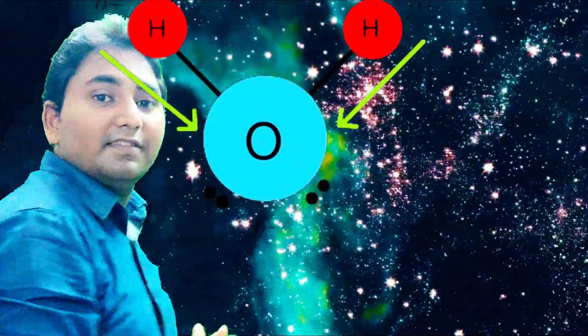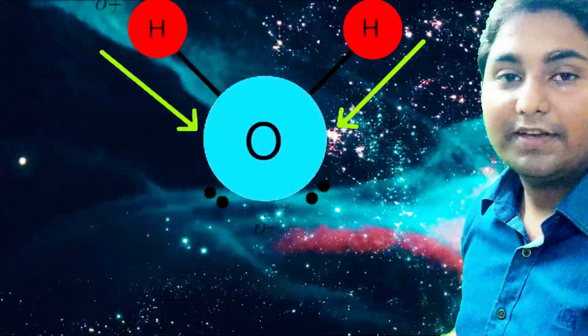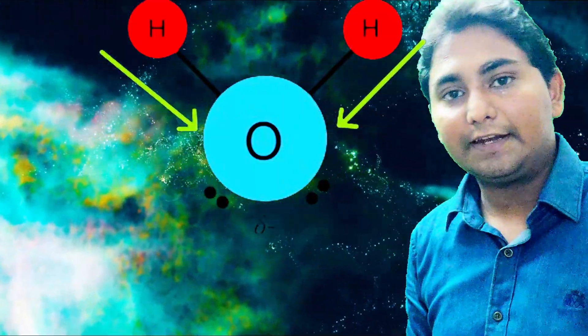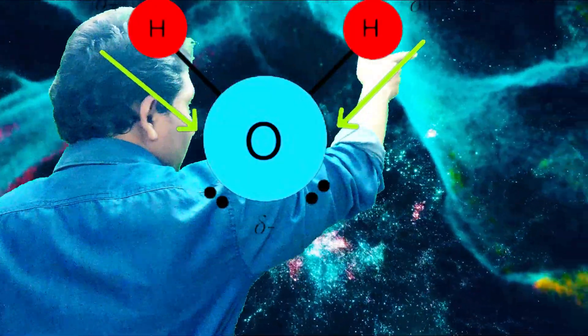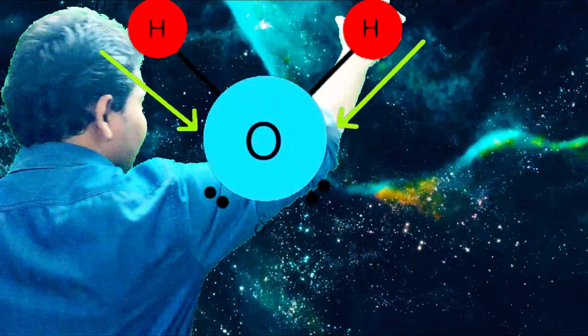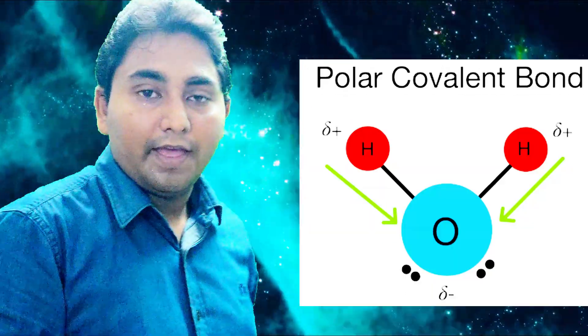Because of that electron attraction, oxygen gets partially negative — delta minus — and hydrogen gets partially positive. Because of that, we say this bond is polarized, and as a result, water is polar.